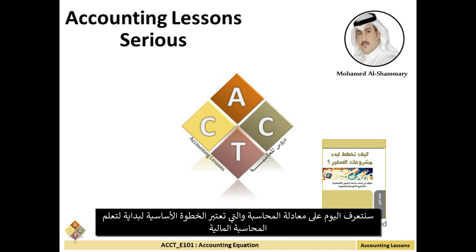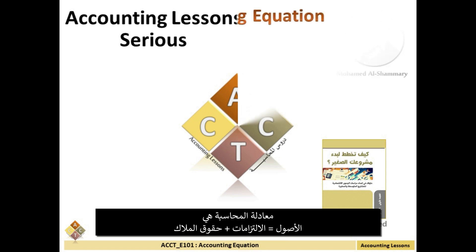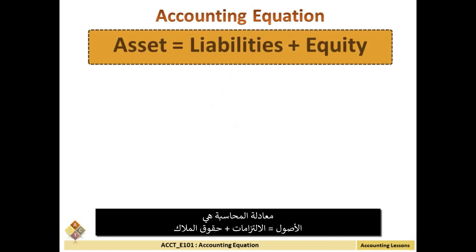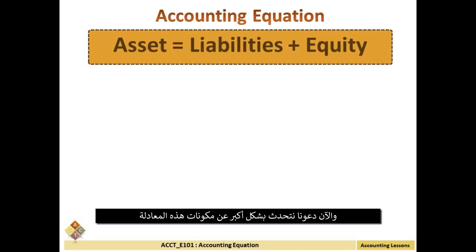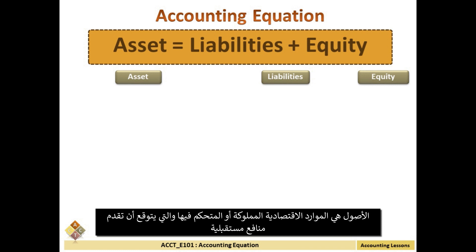The topic is the accounting equation: Assets = Liabilities + Equity. Now let's talk more about the components of the accounting equation. An asset is a resource with economic value that a business owns or controls, with the expectation that it will provide a future benefit.